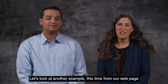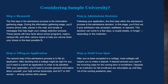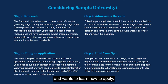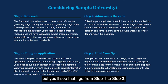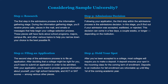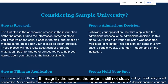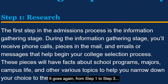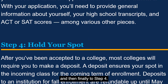Let's look at another example, this time from our web page of the Fictitious Sample University. Here, a keyboard-only user has navigated to the Admissions page and wants to learn how to apply. I use the Tab button to navigate through the page, but you'll see that I go from Step 1 to Step 3, then to Step 2, and lastly to Step 4. If I magnify the screen, the order is still not clear — it goes again from Step 1 to Step 3 to Step 2, and then finally to Step 4.